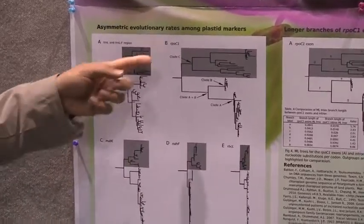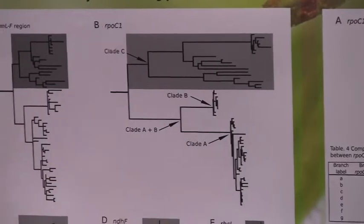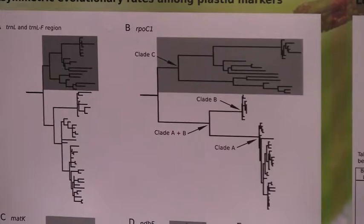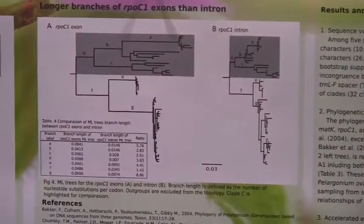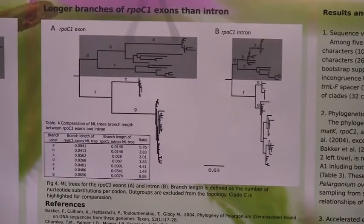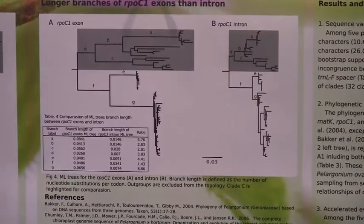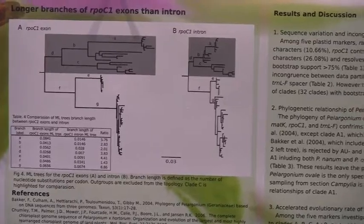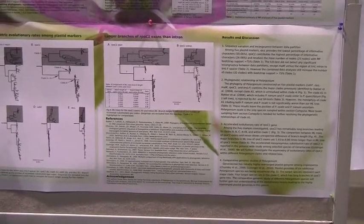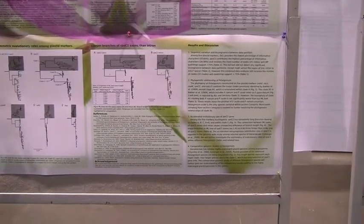Another interesting finding is that among the five markers I used, RPO-C1 has extremely long branches compared to other markers. Because there is an intron in RPO-C1, I tried to compare the exon and the intron separately. The result shows a very unexpected topology between these two trees — the exon actually has more variation than the intron in this gene, which is quite unique compared to our background expectations. I will further investigate other genes with introns to compare the rates across related species.